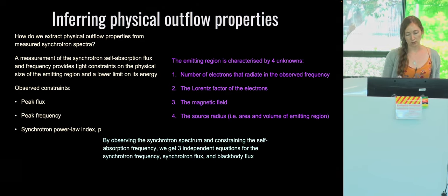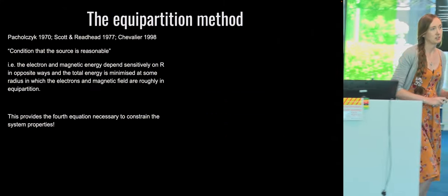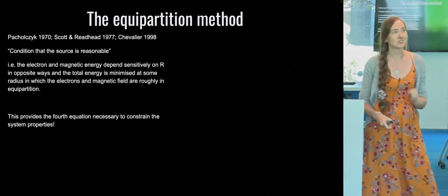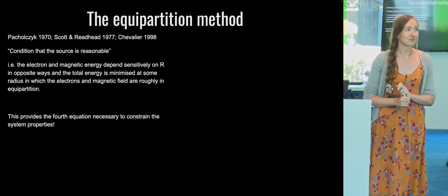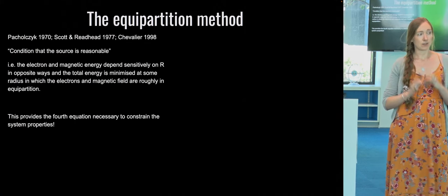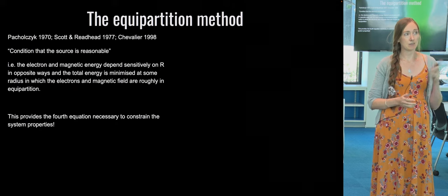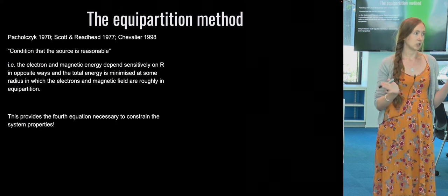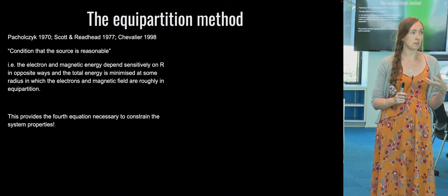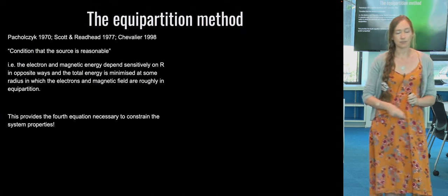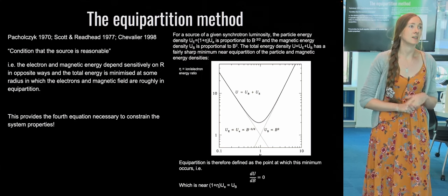To get this fourth constraint we use something called the equipartition method. This comes from the assumption that the source needs to be reasonable. The electron energy and the magnetic energy depend very sensitively on the radius in opposite ways, so the total energy of the system is minimized at some radius where the electrons and magnetic field are roughly in equipartition. Assuming equipartition gives us the fourth equation, and we can then constrain the radius and the minimum energy of the system.